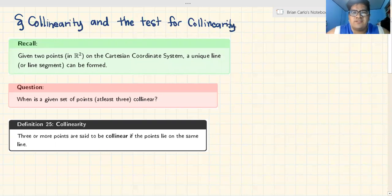Collinearity and the test for collinearity. It sounds like a fancy term and what does that mean? What is collinearity? Does it have something to do with line? I want you to recall something from junior high school. Given two points in R2, on the Cartesian coordinate system.